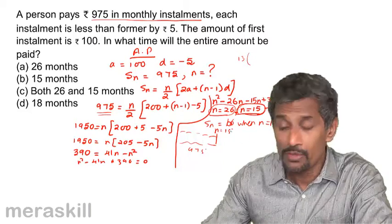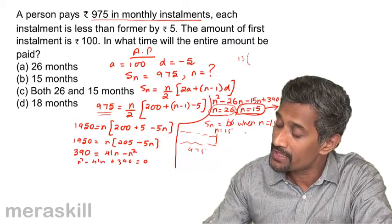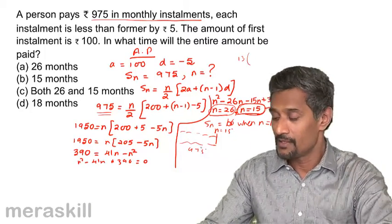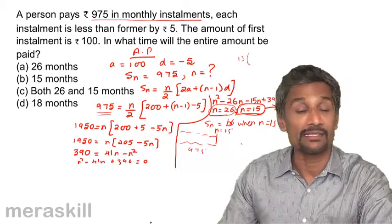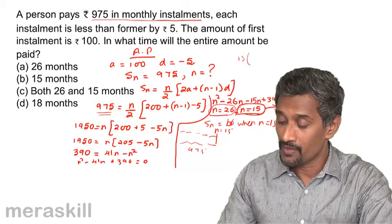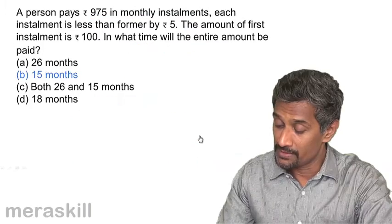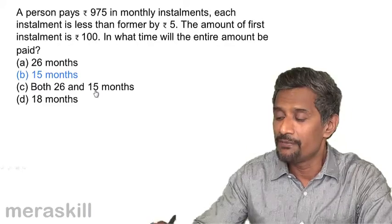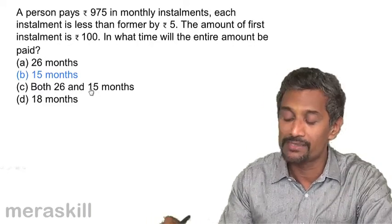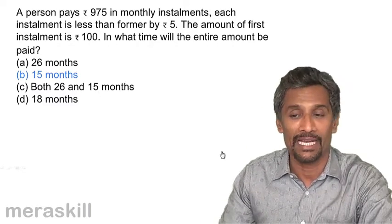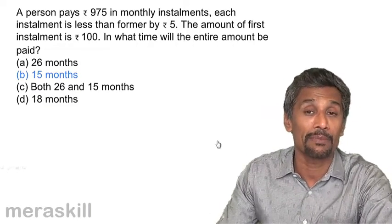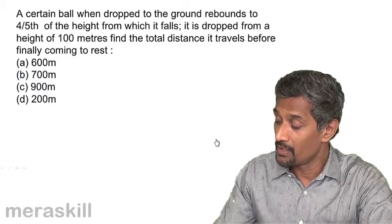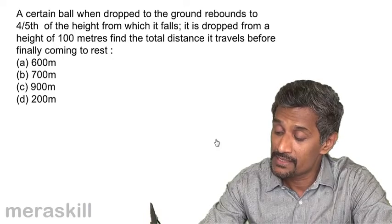Although n = 26 also gives a sum of 975 mathematically, it involves negative installment amounts that cancel some positive ones. Since this is a real-life application of AP/GP, we take only the lower value. The answer is n = 15 months.